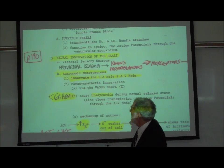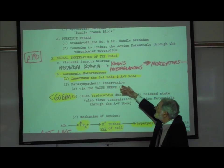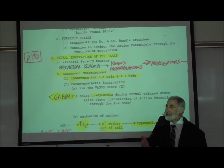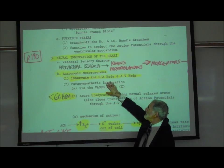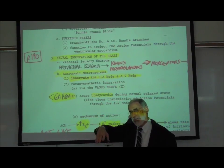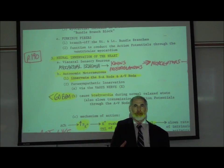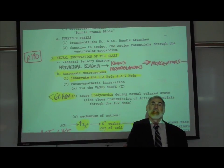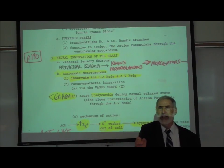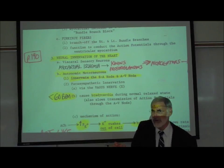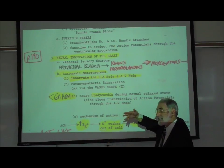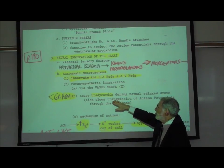Returning to page 190, the autonomic motor neurons — both parasympathetic and sympathetic — specifically synapse at the SA node and AV node of the heart. The parasympathetics reach the heart via the vagus nerve, cranial nerve number 10. Inside the vagus nerve are hundreds of thousands, millions of parasympathetic autonomic motor neurons, some of which branch off the vagus nerve and extend out to the heart.